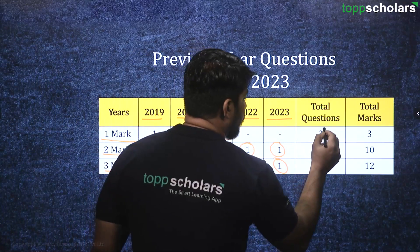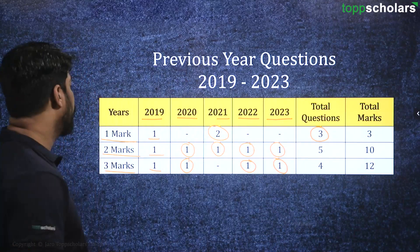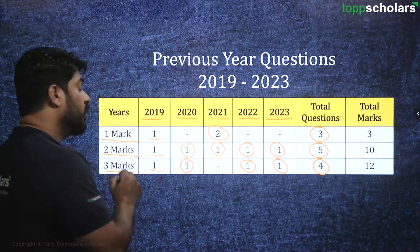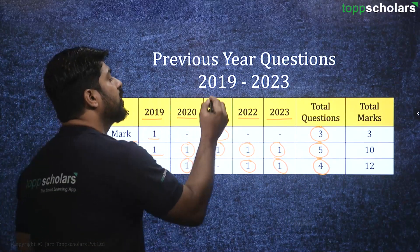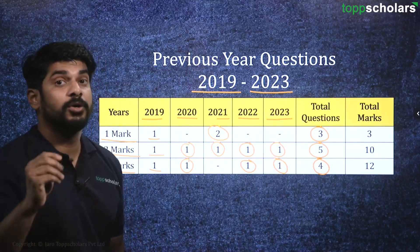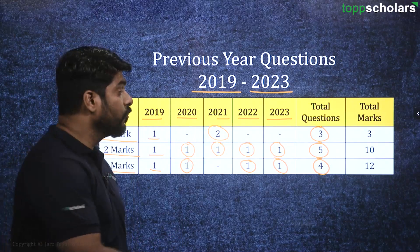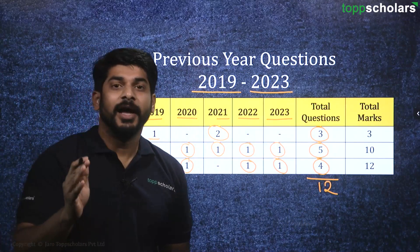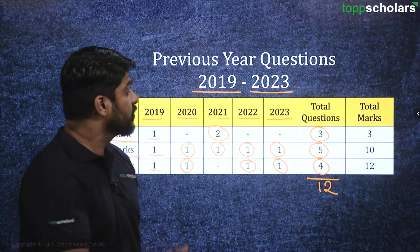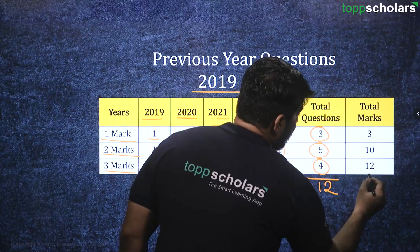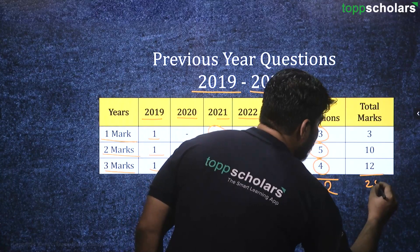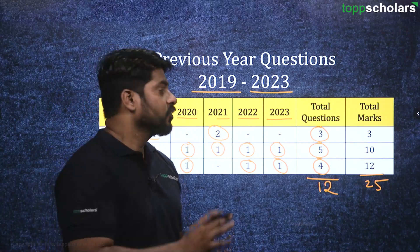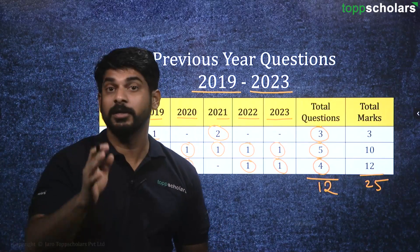In total, there were 3 questions for 1 mark, 5 questions for 2 marks and 4 questions for 3 marks in the last 5 years from 2019 to 2023. Looking at this chart, we can see that in total we have got 12 questions that have been asked. This chapter is very easy but at the same time it is a scoring chapter, because there are total 25 marks' worth of questions asked in the last 5 years. That is why this is a very, very important chapter.